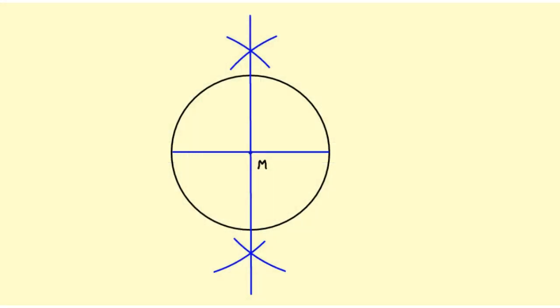So all I need to do is take my straightedge and connect those points. This square is inscribed in the circle. Thank you.